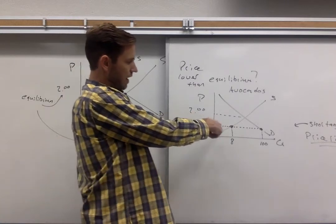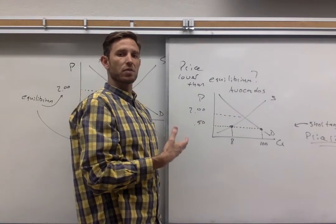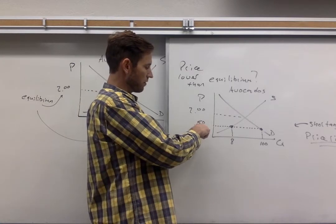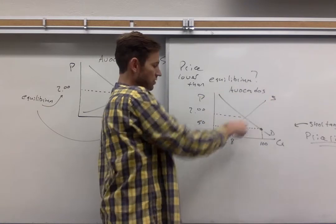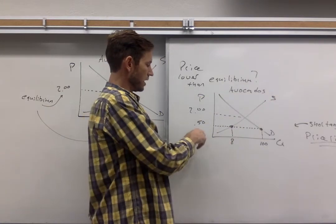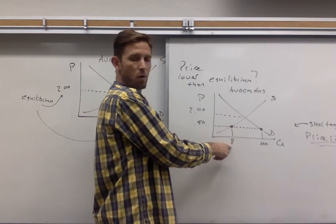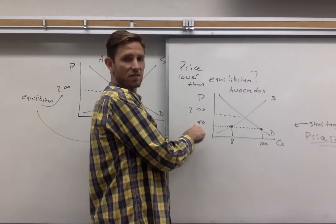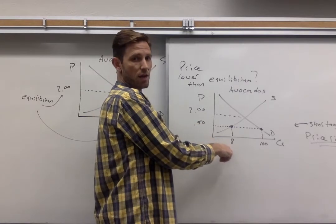We want to look to the supply curve and demand curve to get some inference about how these groups are going to respond. So if we read over from 50 cents, the first curve that we run into, that comes from the supply curve. So that eight would represent our quantity supplied. So that's a small number. That's only eight avocados. The interpretation of this point is that when the price is 50 cents, sellers are willing and able to sell only eight avocados.